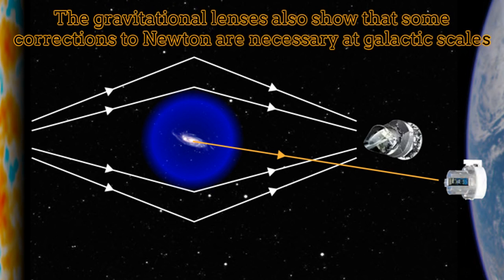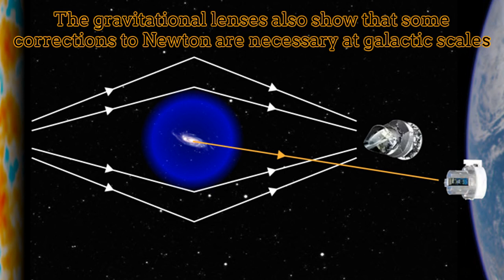The anomalous galaxy rotation curve is not the only evidence of something strange at the scales of galaxies. Gravitational lenses have also perceived unusual additional bends for the light crossing the galaxies. Such additional curvature effects cannot be explained by only using the visible matter as a source of gravity.